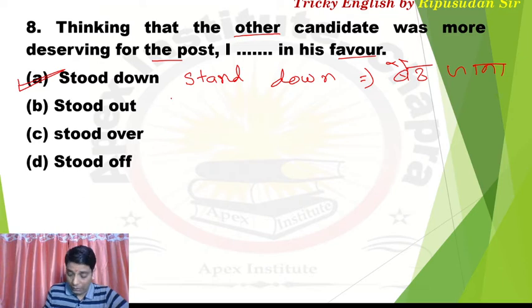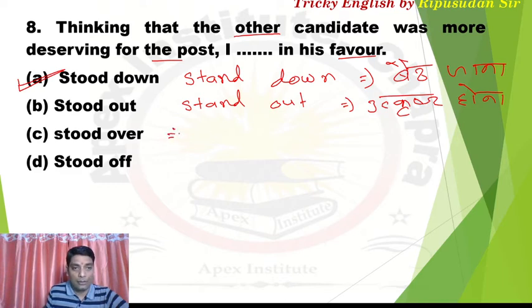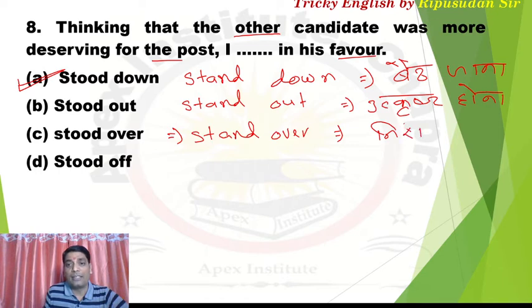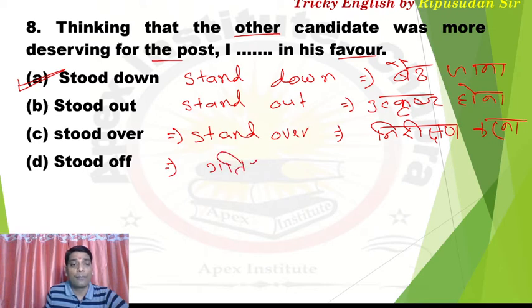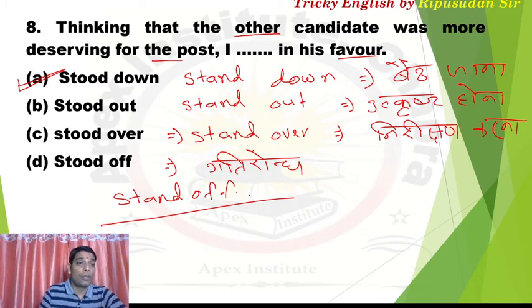'Stand out' means to be outstanding — to be distinct from others, to be better, to be excellent. 'Stand over' means to observe closely, to supervise what is happening or what changes are coming. 'Stand off' means a deadlock — a quarrel between two groups that prevents any issue from moving forward. It is used as both a noun and a verb. Answer is 'stood down' because the sense is past — 'was' is used, so past tense follows.